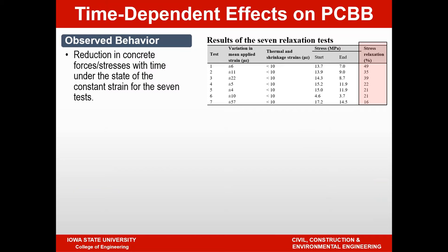Looking at the results showing observed behavior for all of the tests: the variation in mean applied strains was kept pretty small and constant, with thermal and shrinkage strains kept to less than 10 microstrains using a dummy sample. The change in stress due to relaxation varied as much as 49 percent in the first test down to 16 percent in the last test, which was the older specimen. Obviously, the older the specimen, the lower the relaxation — the lower the force or stress loss is going to be.